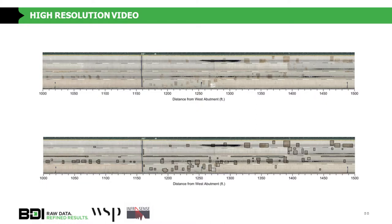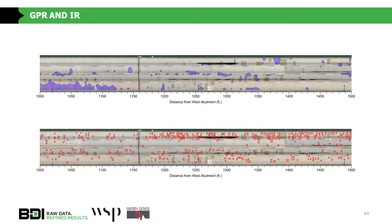We can use the HRV data to identify areas of spalling, patching — whether HMA or concrete patching — and automatically identify quantities of those patches. States that have moved to element-level condition rating based on percentage of deck that's patched or spalled can have this done at highway speed with exact automated measurements, which is much quicker, more reliable, and more repeatable than sending out crews manually. We can also overlay GPR data to show areas of future degradation alongside infrared-detected areas that are currently delaminated.